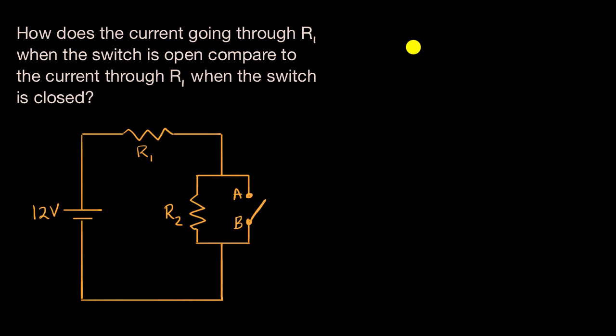All right, so let's just think about the two scenarios. We could view the current as this right over here, this current that we care about. We could either measure it there or you could measure it right over there. And let's first think about the scenario where the switch is open.